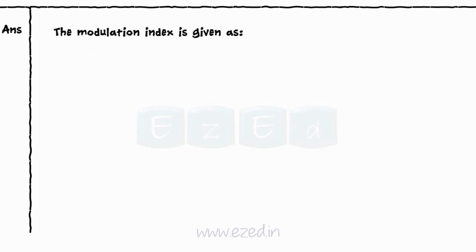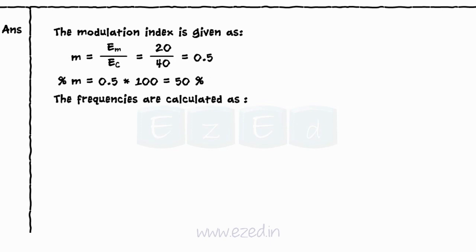The modulation index is calculated as ratio of Em to Ec and comes out to be equal to 0.5. Thus percentage modulation becomes 50%. The upper sideband frequency equals carrier frequency plus modulating frequency equals 11 kHz.